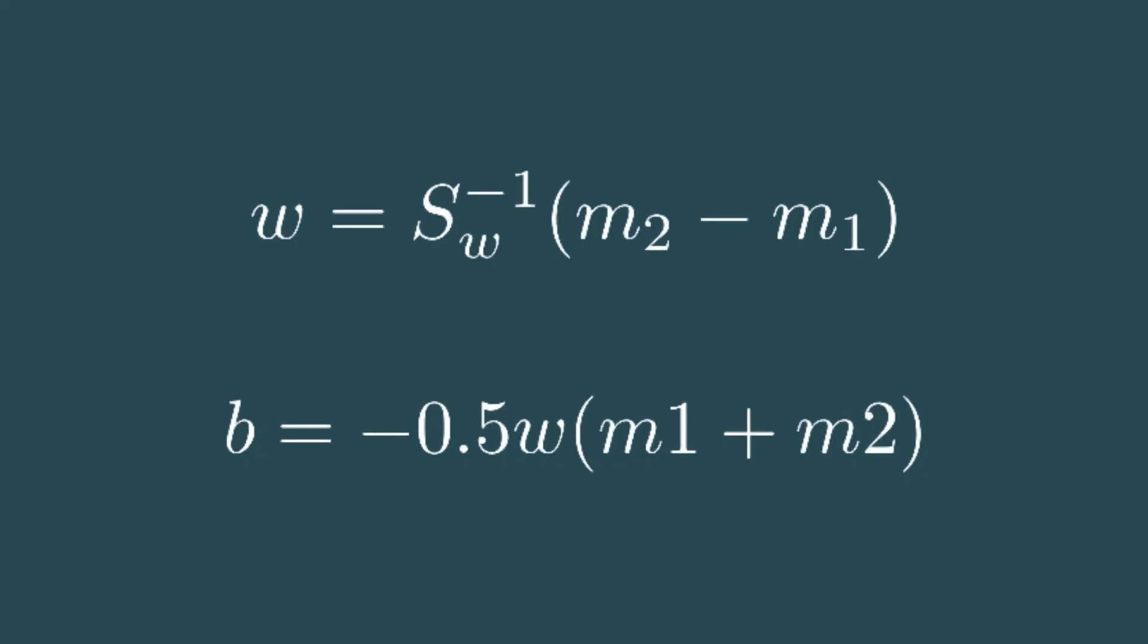After maximizing the Fischer criterion, we get the equations for v and b. These are very easy to implement, but keep in mind that the inverse of the covariance matrix for v takes a lot of time if you have high dimensional data. That means if each data point has a lot of features.